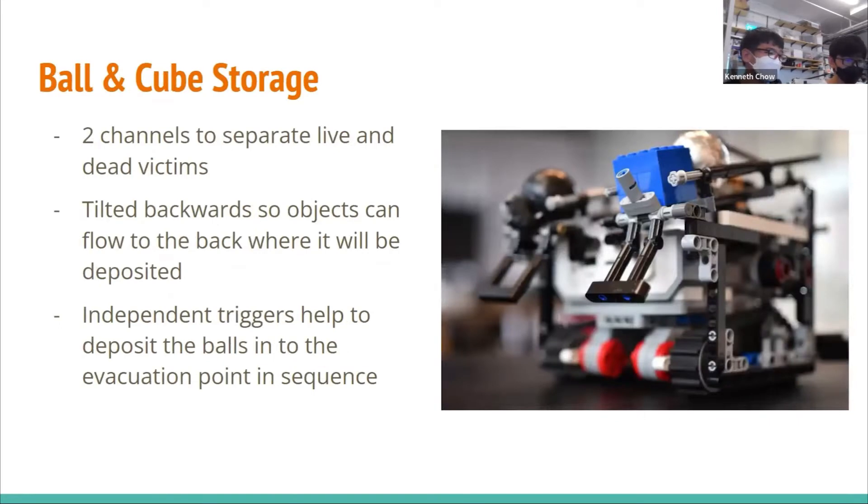Now, I will be moving on to talk about the ball and cube storage. There are two storage channels attached to the robot, separated for alive and dead victims. The storage channels are slightly tilted backwards so that objects can flow to the back when it will be deposited. There are also independent triggers, such that when the robot reverses into the deposit zone, the triggers will be triggered and the balls and cubes in the storage channels will fall into the deposit zone.